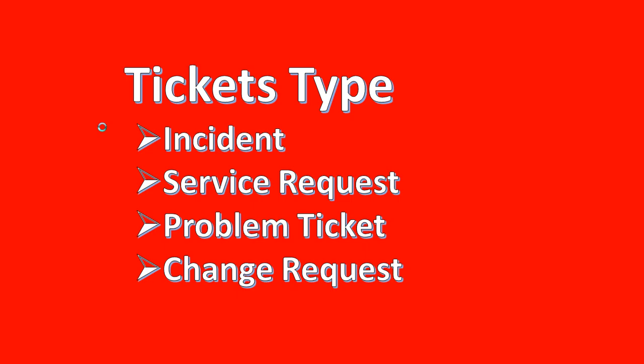The next type is a problem ticket. If an issue is occurring frequently — for example, today my database is down, we did some research and brought the database back up, but after some time the same database is going down again — this issue is occurring frequently. We need to find the root cause analysis so that the database will not go down for the same issue. To track this we create a problem ticket and assign it to the resolver group.